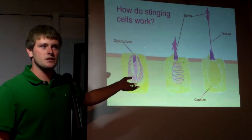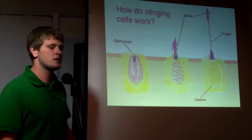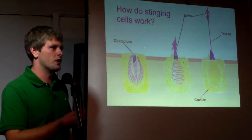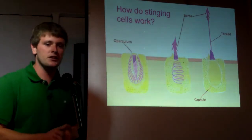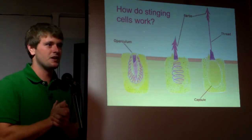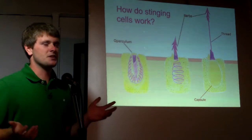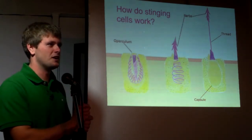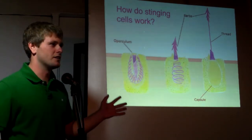With corals — at least corals in Hawaii — the stinging cells are too small to affect humans, but they're big enough to grab small shrimp and other plankton floating around. Jellyfish have longer ones. If you've ever been stung by a jellyfish, sometimes it feels like you're getting electrocuted, but it's just thousands of tiny needles stabbing into your skin and releasing a neurotoxin.